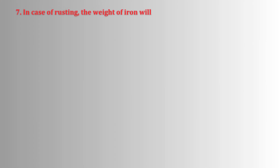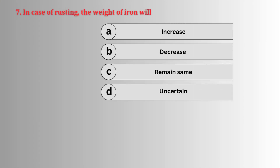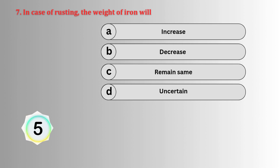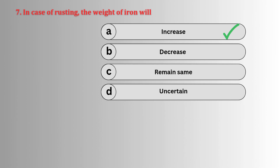In case of rusting, the weight of iron will increase. The sky appears blue due to scattering of light.